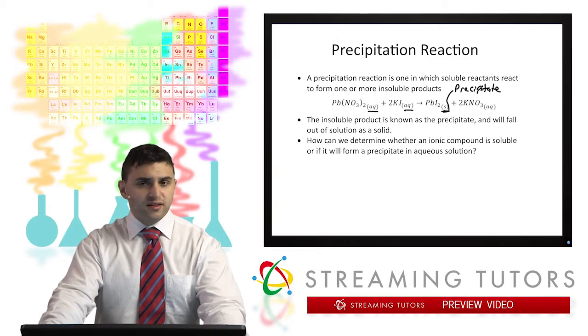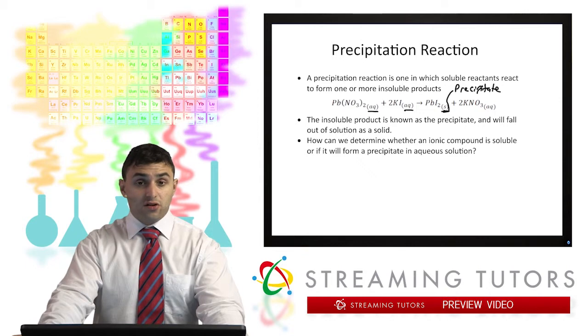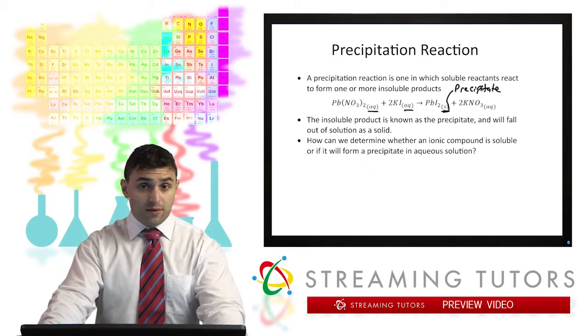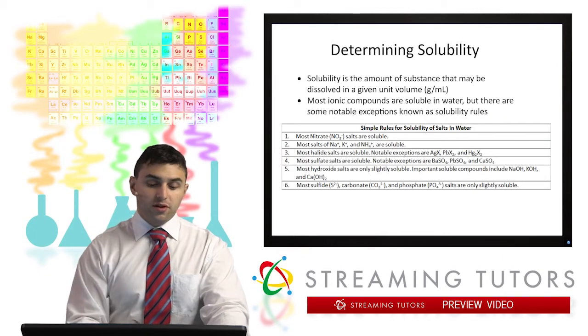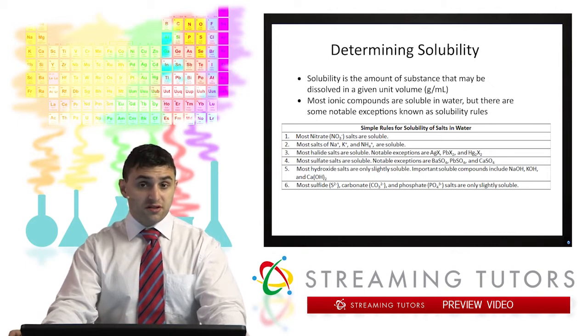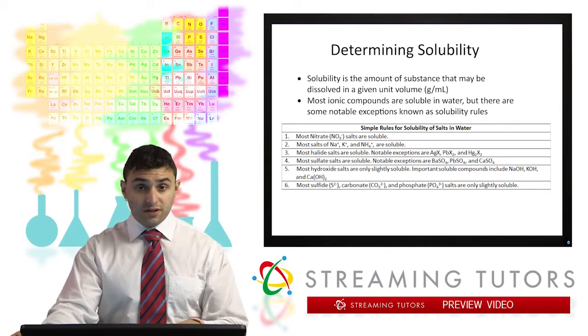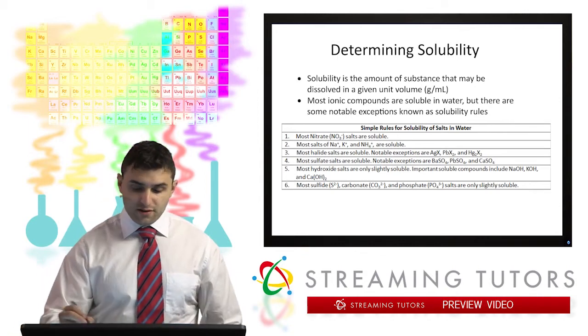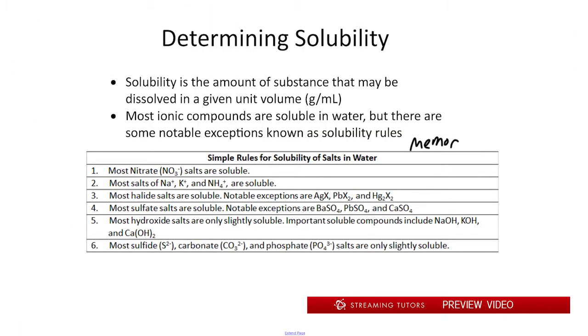So the question is, how can we determine what compounds are insoluble in water versus soluble compounds? We do that through a set of solubility rules. This table on the bottom shows the exceptions to the fact that most ionic salts are soluble. The ones highlighted by these rules are not soluble. It's important that you memorize these rules. In general, the first rule is that most nitrate salts are soluble. The second rule is that most salts of Na+, K+, and NH4+ are also soluble.